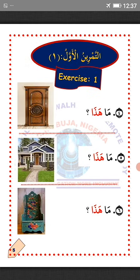Arba, number 4: Mahatha — what is this? So how do you say 'this is a da' in Arabic? Khamsa, number 5: Mahatha — what is this? So how do you say 'this is a house' in Arabic? Sittah, number 6: Mahatha — what is this? So how do you say 'this is a chair' in Arabic? La'alaka fahimti? I hope you understand. MashaAllah.